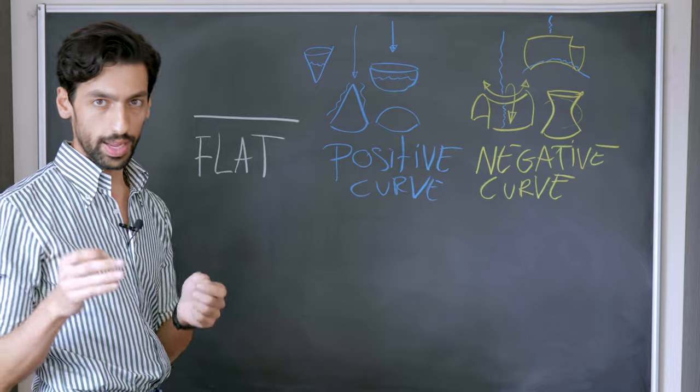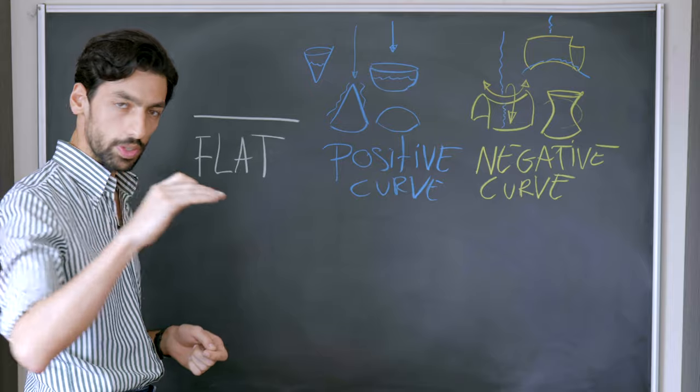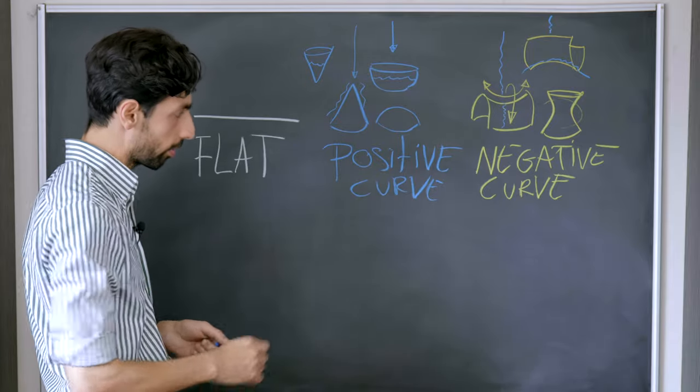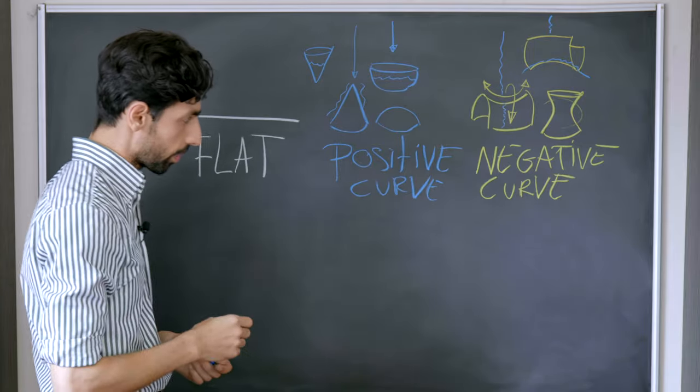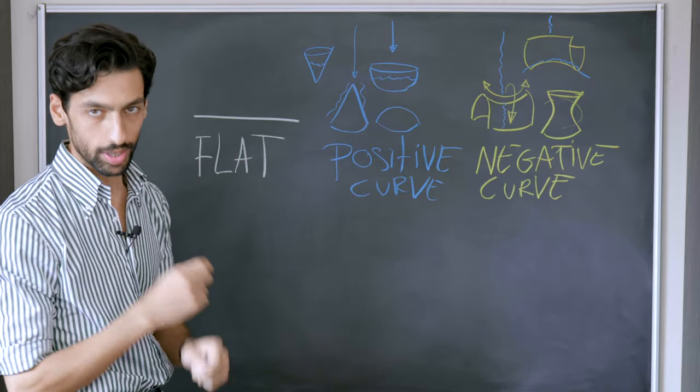Now, we are going to use relative length to turn a flat surface, which is basically our fabric, into a surface with either a positive curve or a negative curve. Now that you understand this, let's see what relative length has to teach us.